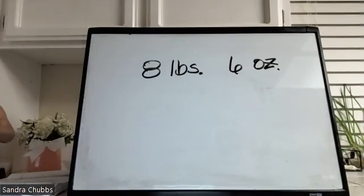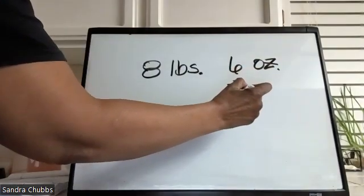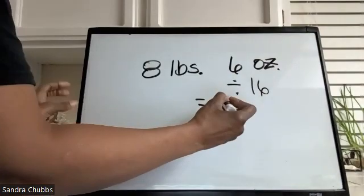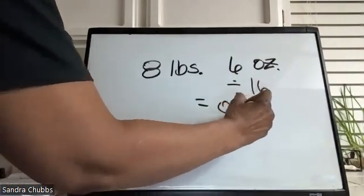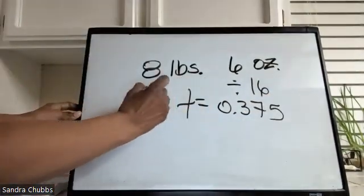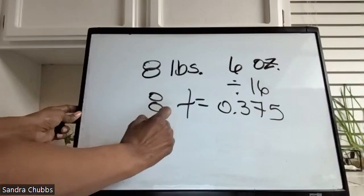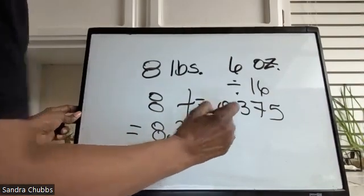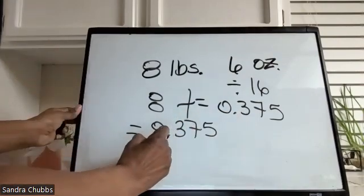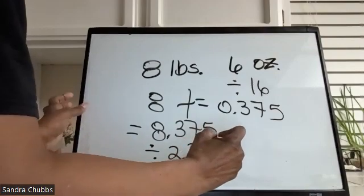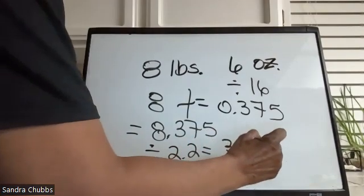Here's the last one: 8 pounds, 6 ounces. Step one, convert the ounces to pounds by dividing by 16. That comes out to 0.375. We add that to the 8 pounds here, and that's going to give us 8.375. Now we're going to convert this to kilograms by dividing by 2.2, and that's going to give us 3.80.